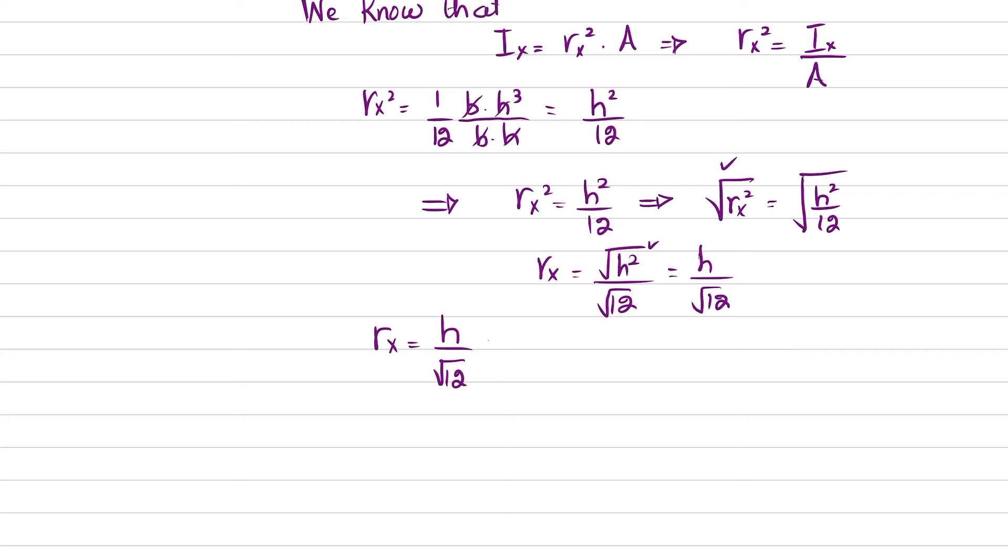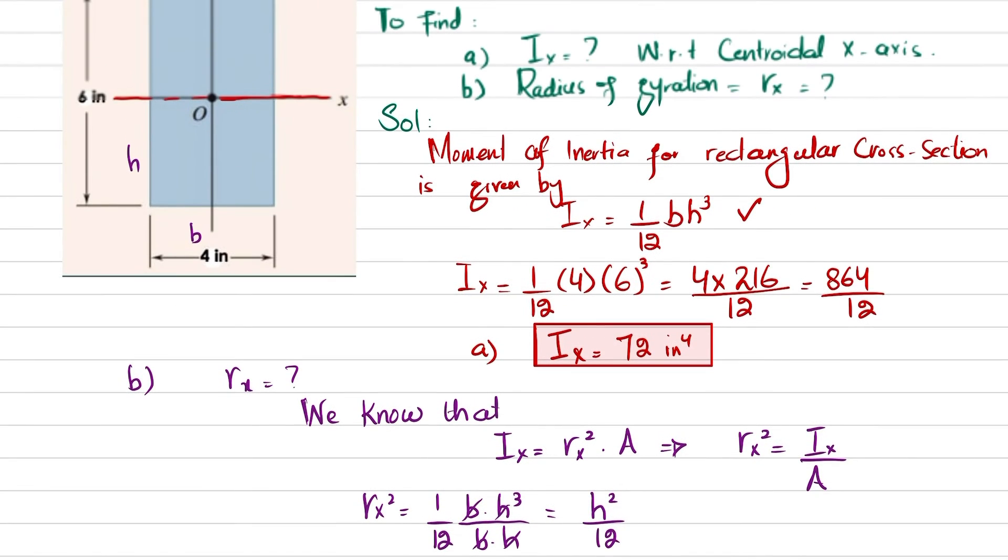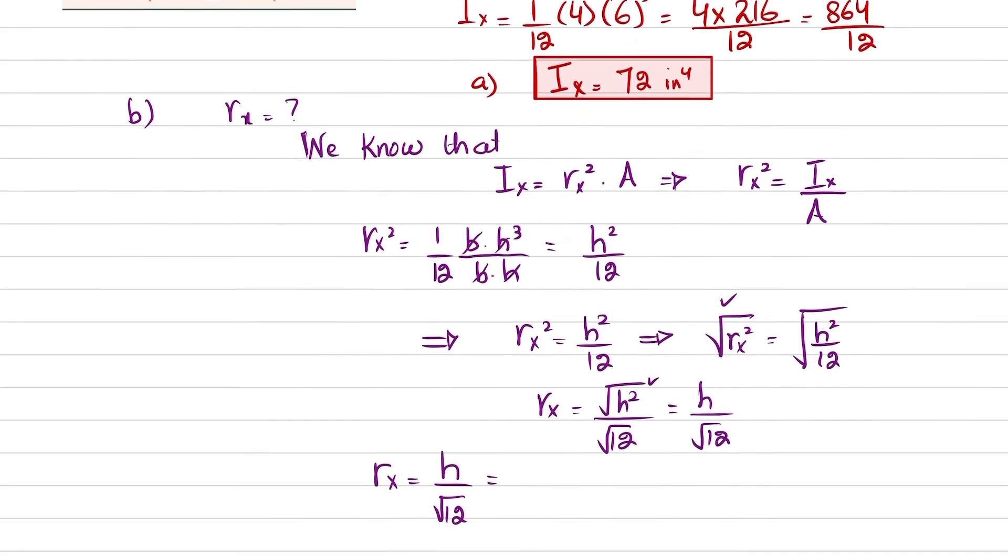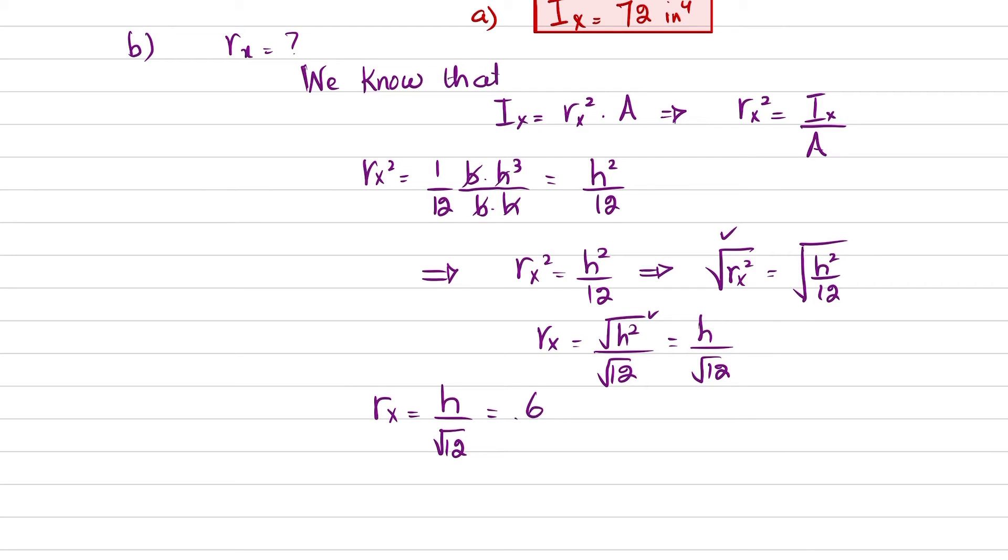So this is the formula for radius of gyration about centroidal x-axis, and that is h over square root twelve. Now you have h is six inch, so six divided by square root twelve will give you 1.73 inch. So radius of gyration is equal to 1.73 inch.